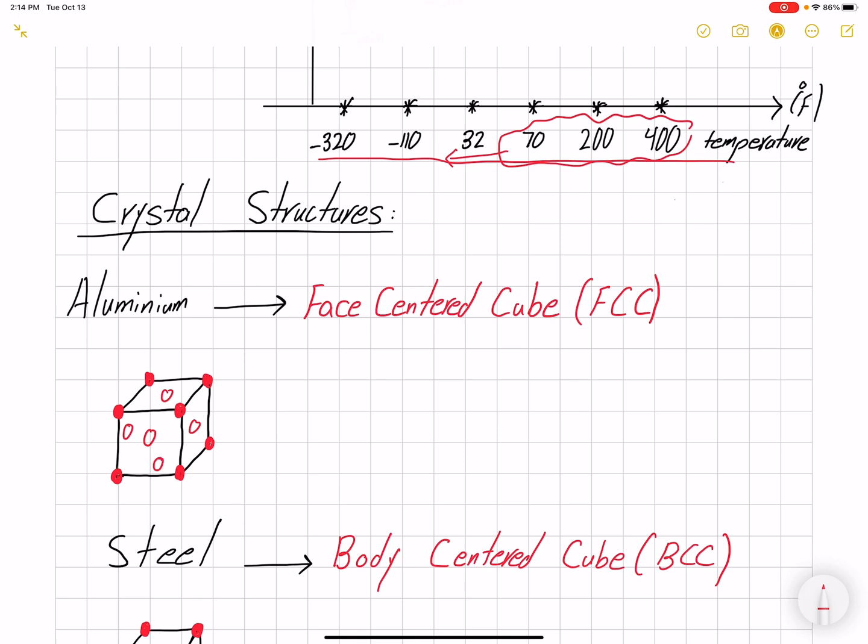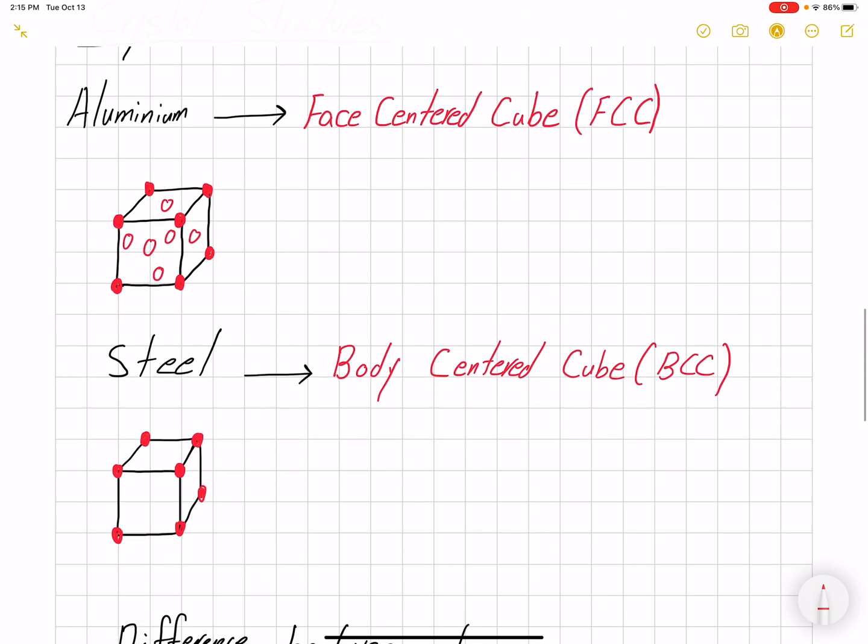Steel is body-centered cubic (BCC). Steel, or this structure in general, has a brittle-ductile transition, while FCC does not have brittle-ductile transition.